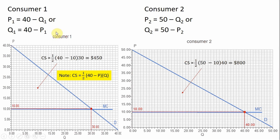Here are two consumers, and they do have different demand curves. Consumer one's inverse demand is 40 minus Q. Consumer two's demand is also given. Generally in two-part tariffs, the format is price equals marginal cost. So with marginal cost at $10, the price is $10.